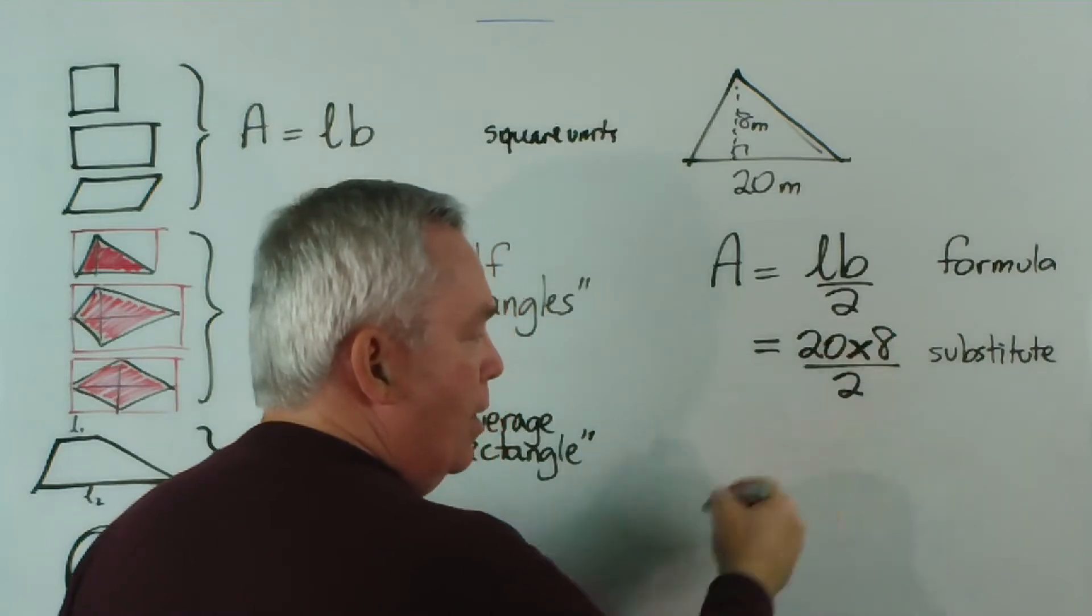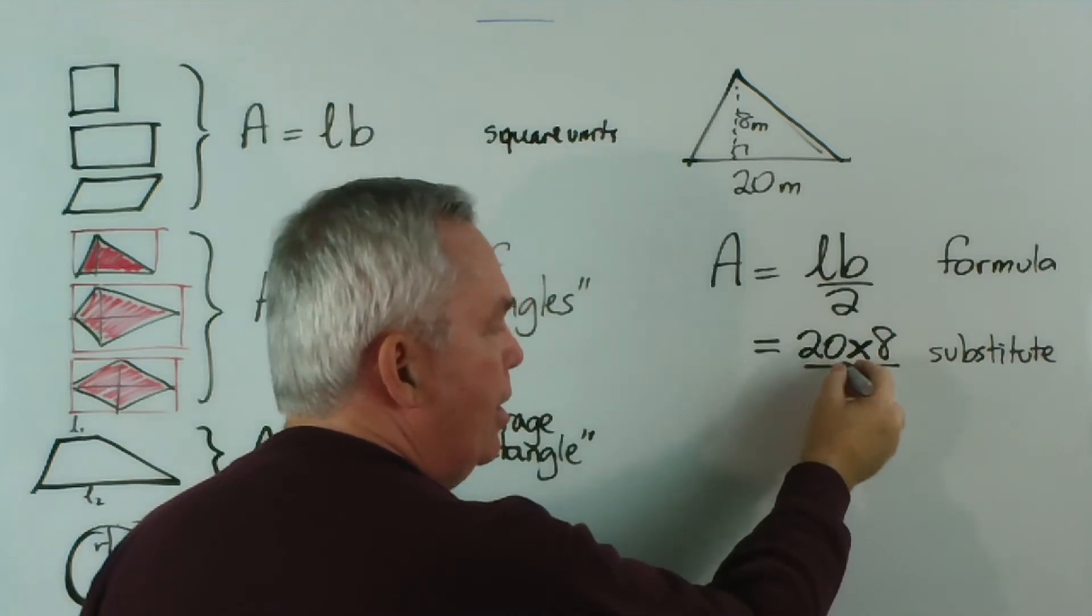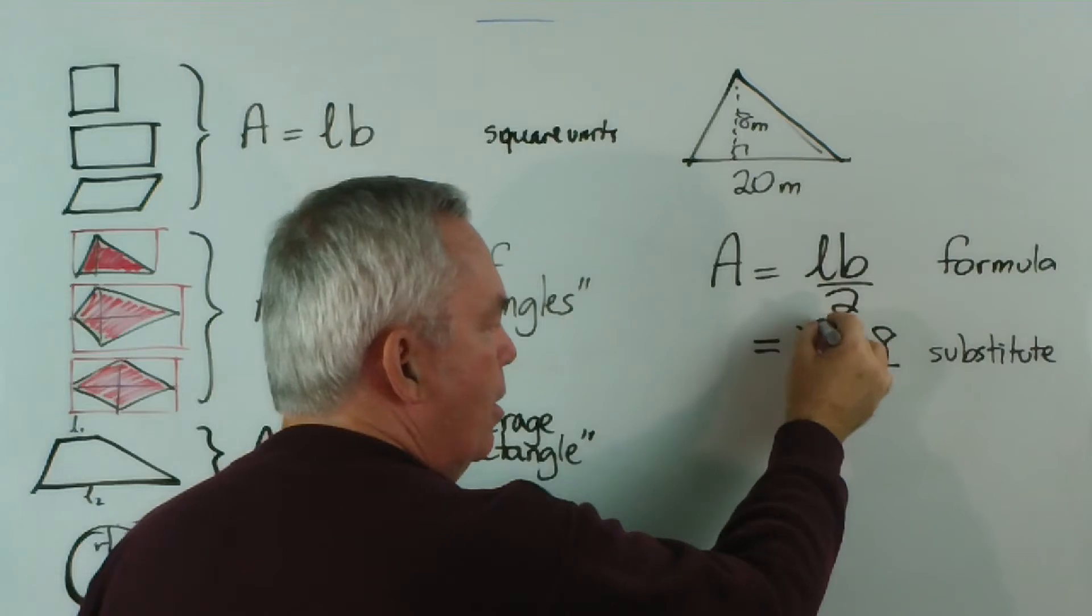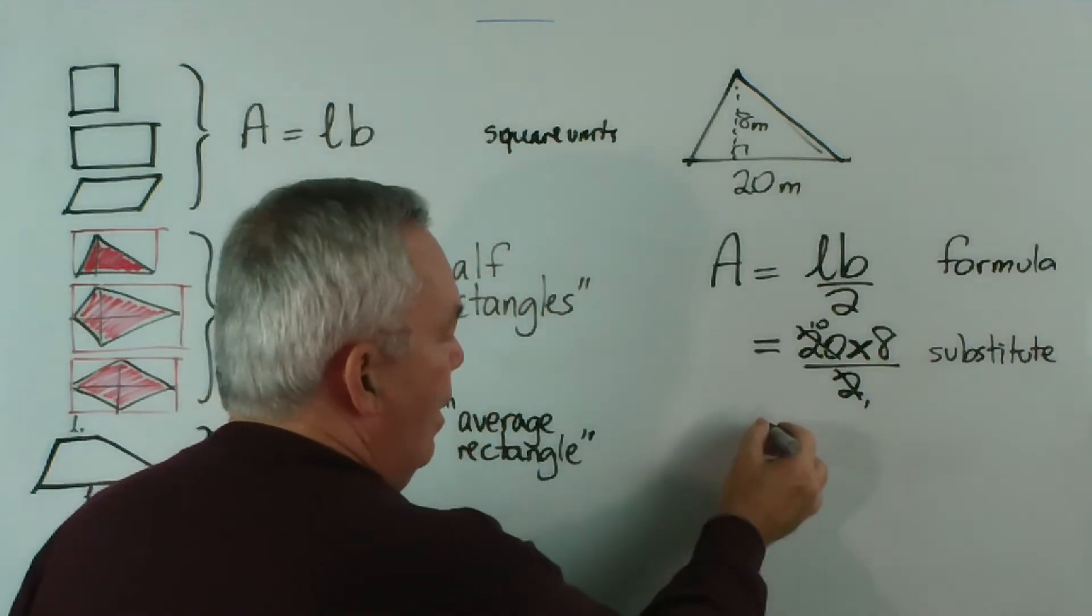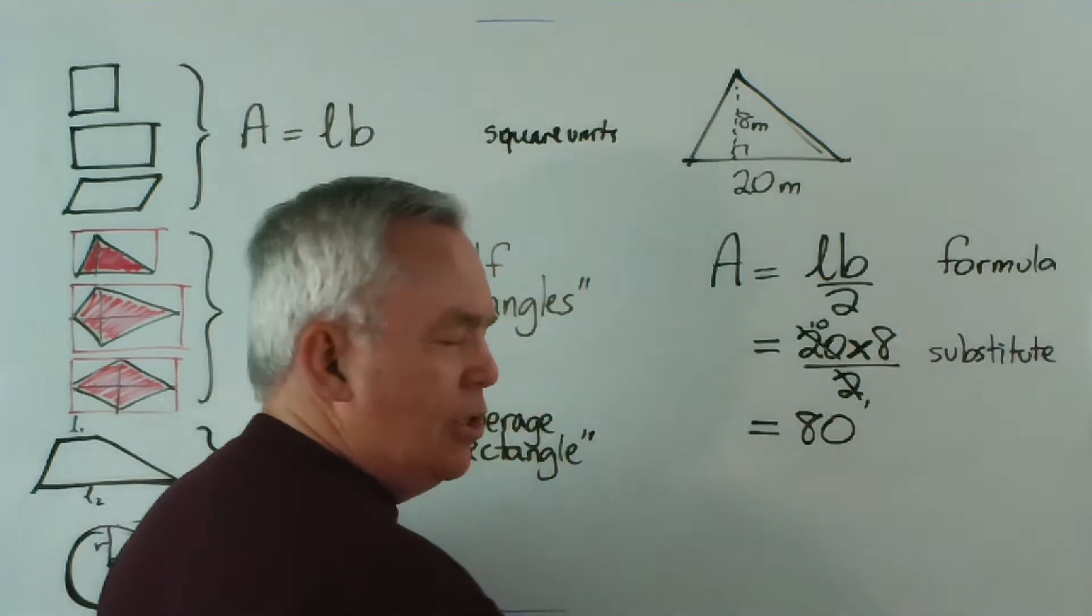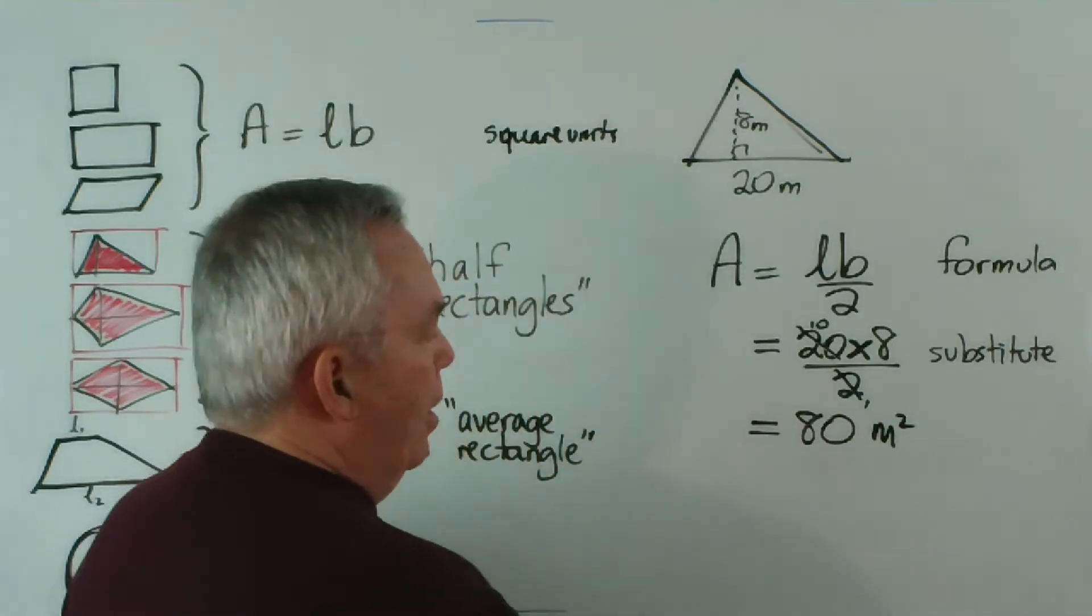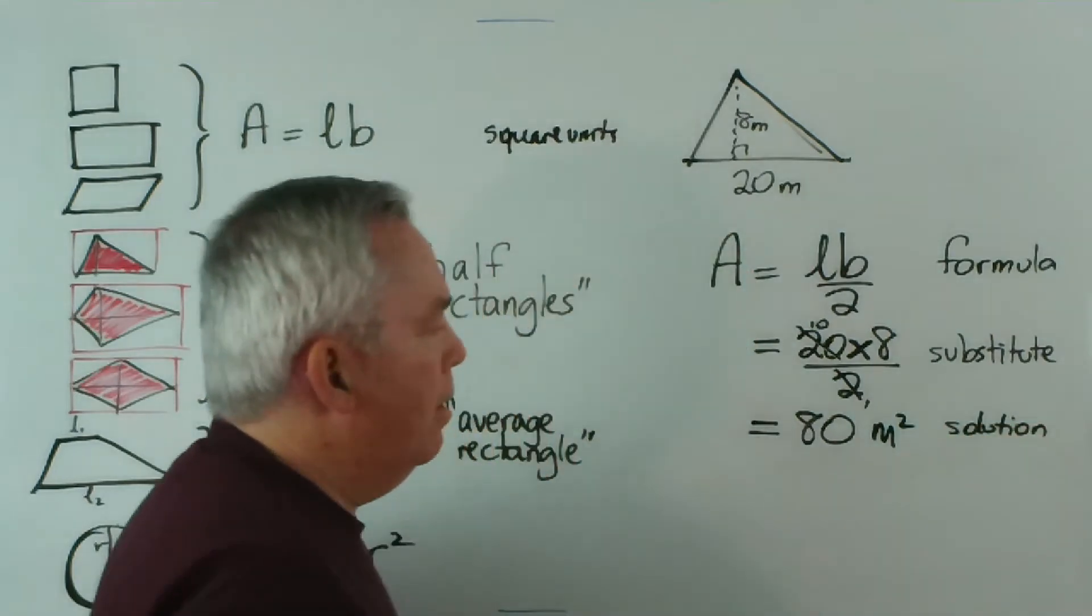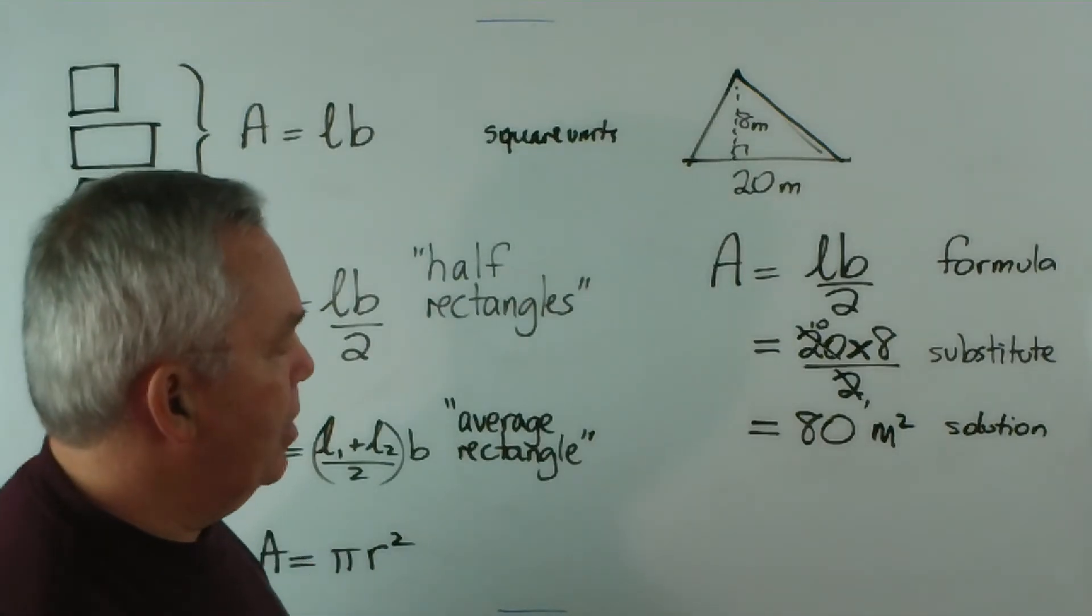Now, we could do 8 times 20 and divide the answer by 2, but if you're a little bit fast you realize that 2 actually divides into these numbers. 2 divides into 20, 10 times, at least it goes into itself once. And our answer is going to be 10 times 8 is 80 square meters, or meters squared. And here's our solution. This is a good way of setting your work out with three simple steps.